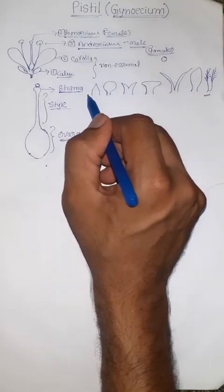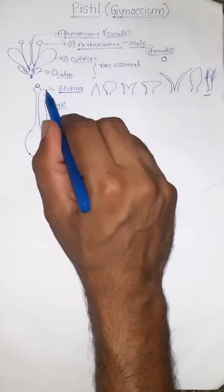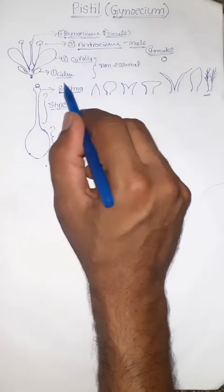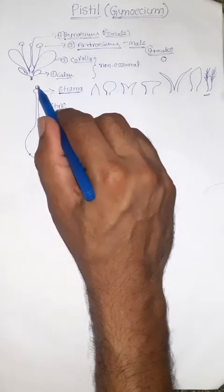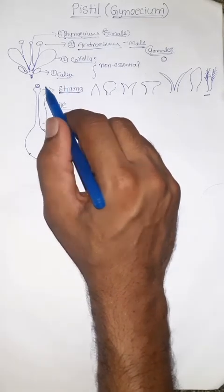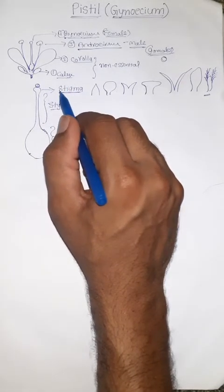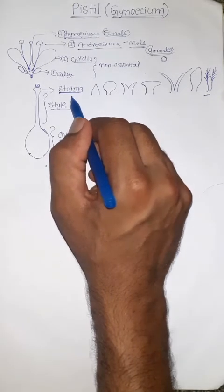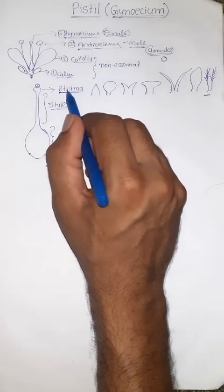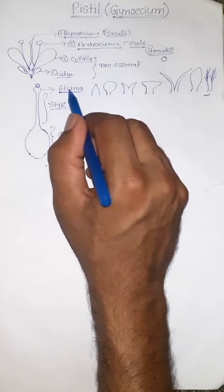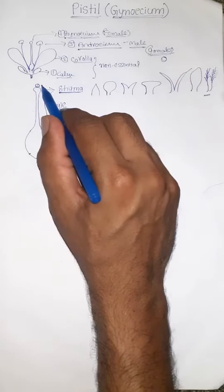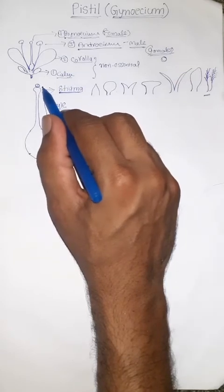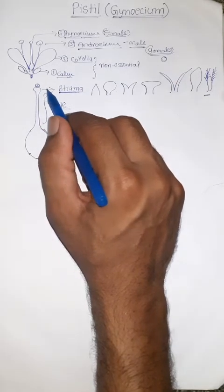The function of Stigma also includes the secretion of nutritive material for the germination of pollen grains. Usually the stigma surface is sticky, which is useful to trap or catch pollen grains from the wind.